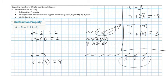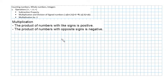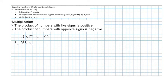So much for addition and subtraction. Now let's look at multiplication and division. If you're multiplying two integers and they have the same sign, then the result is positive. So 3 times 5 is 15, and minus 3 times a minus 5 — using parentheses without the times sign — is also 15.